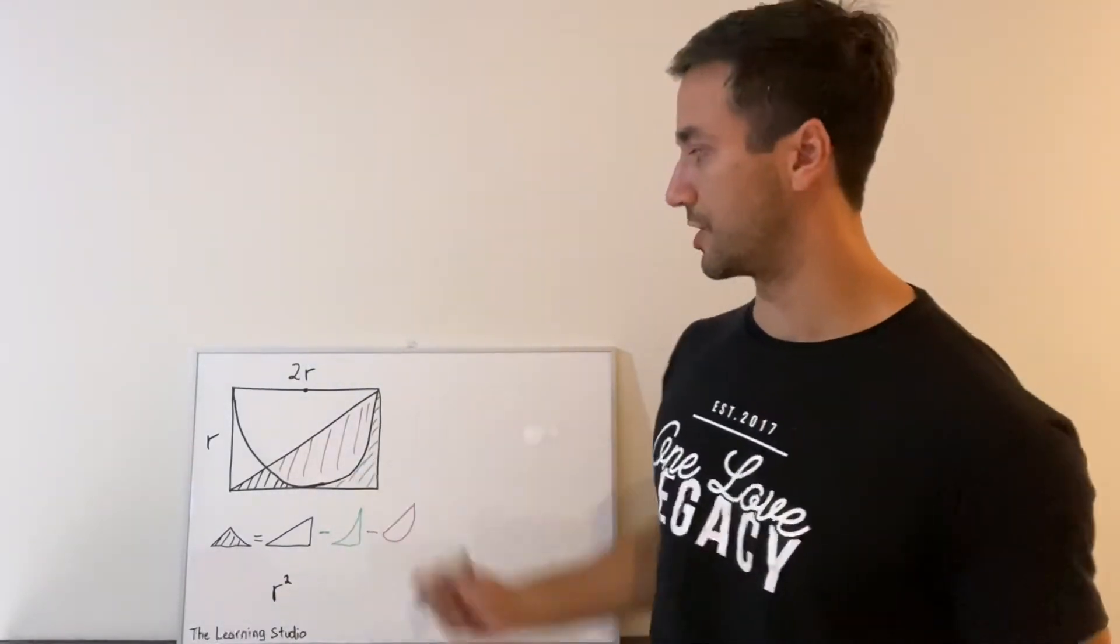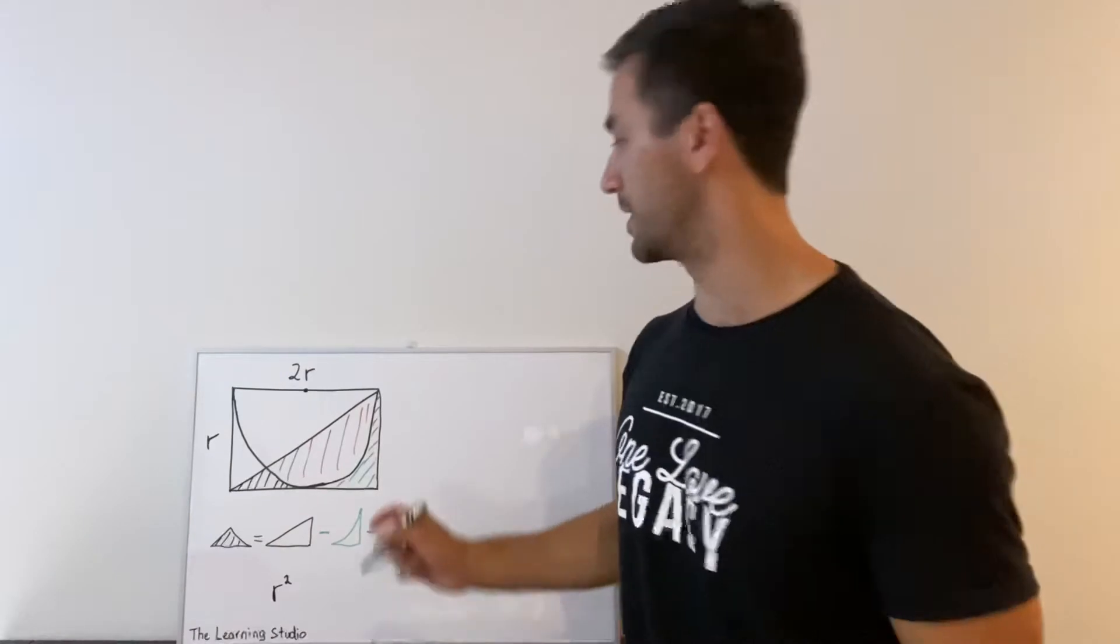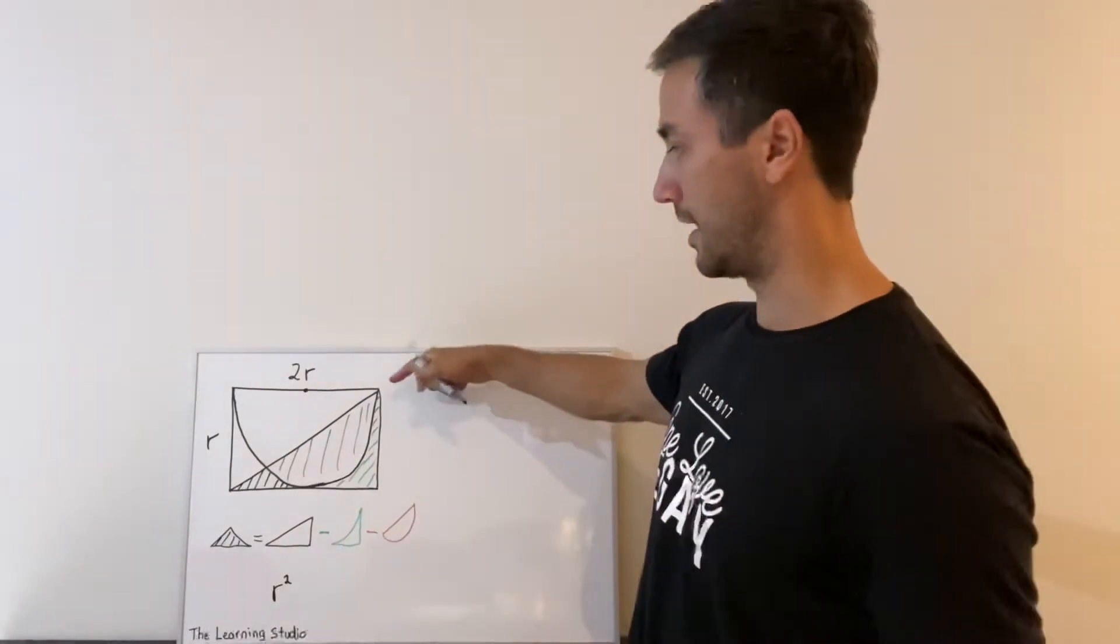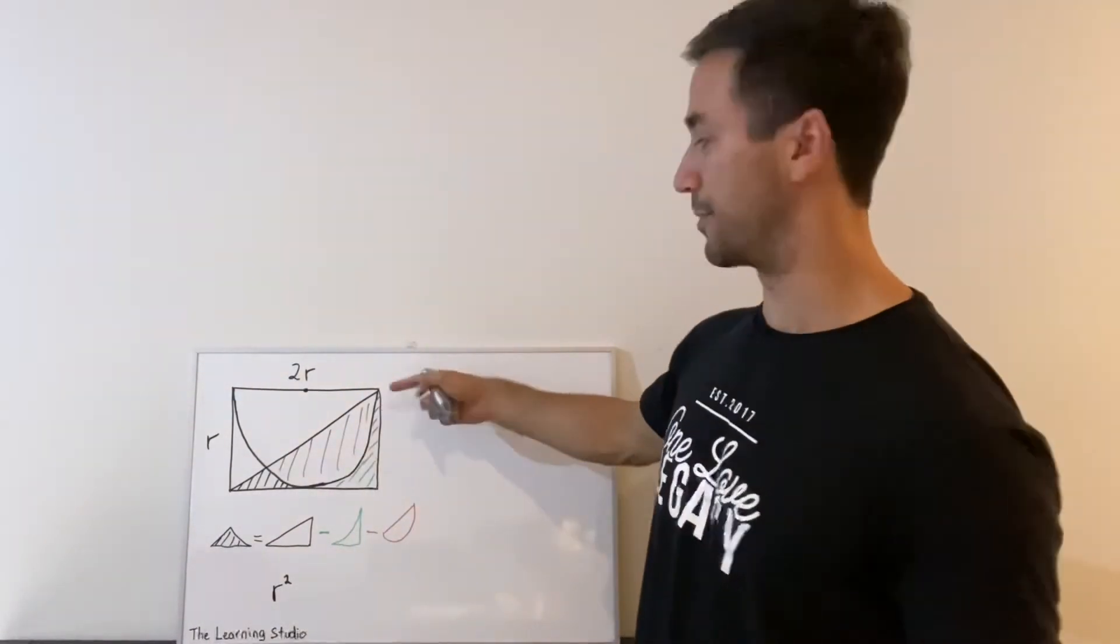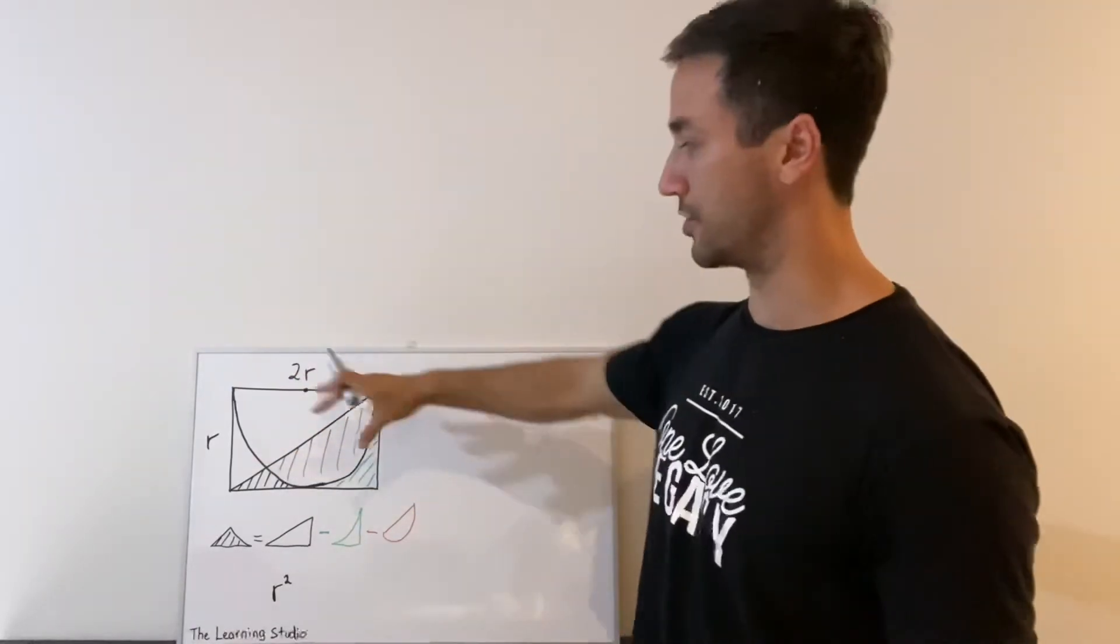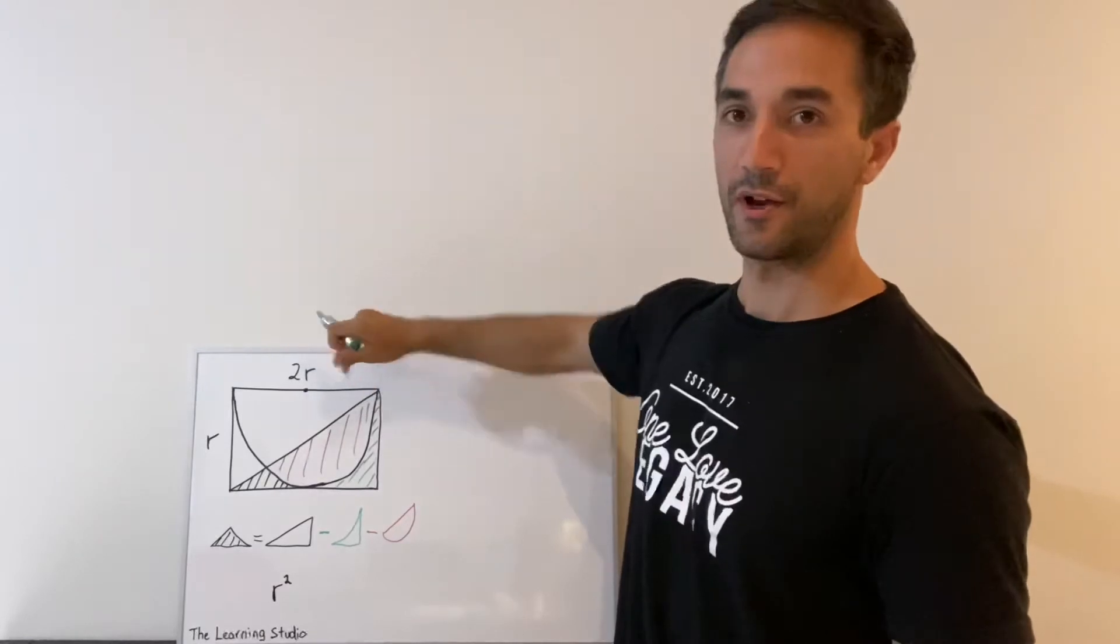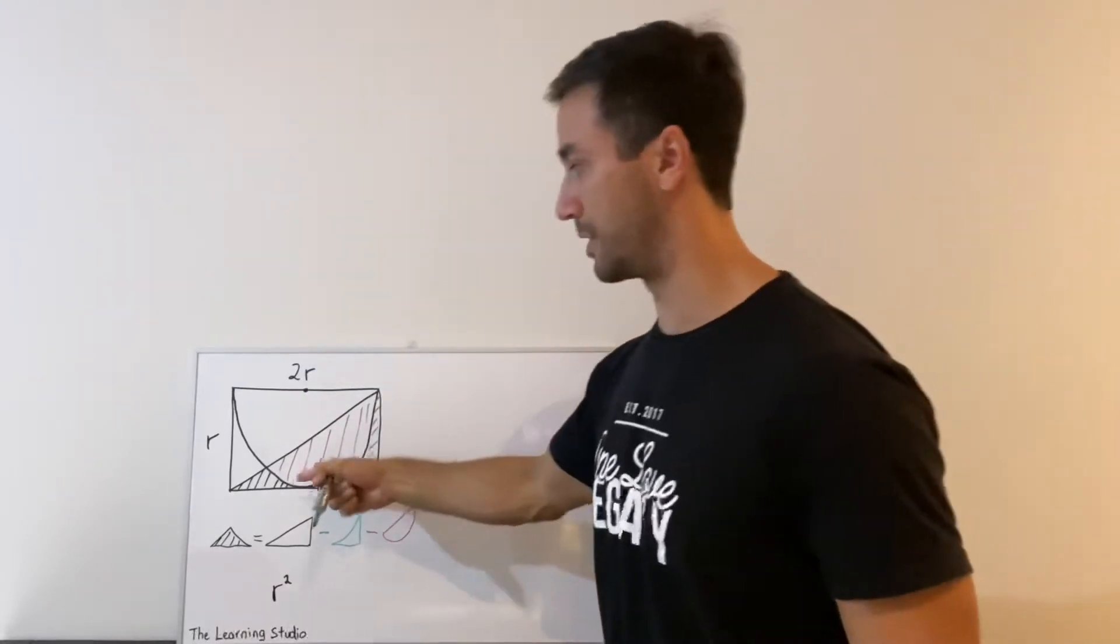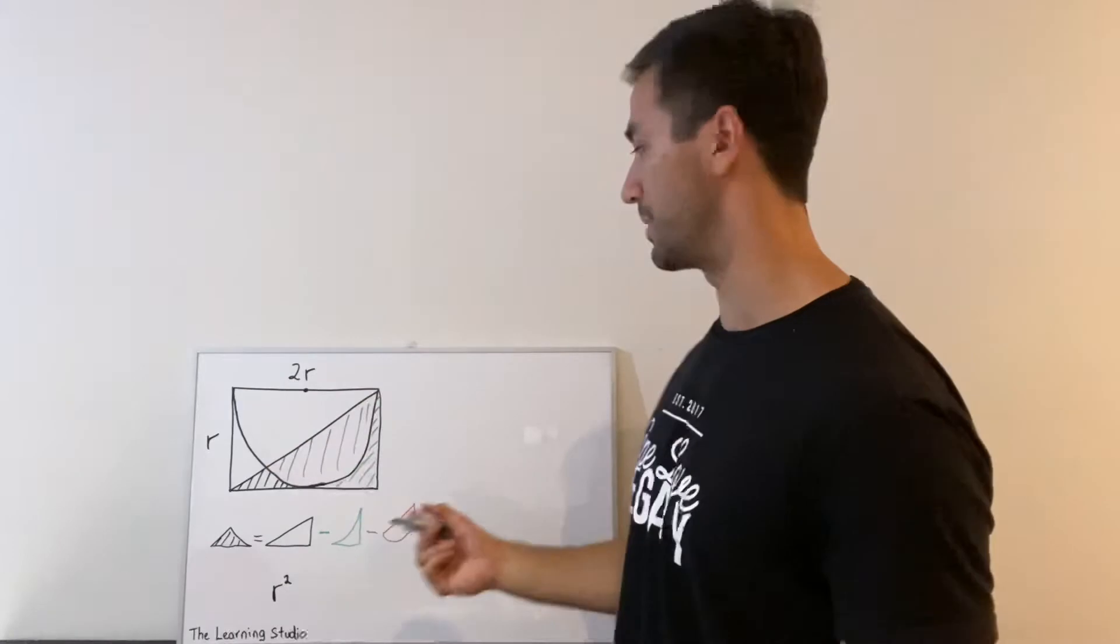The area of this green section is a little bit more involved, but it's still not too tricky. To get this green section, probably the easiest way to do it is to take the area of that entire rectangle and just remove that semicircle. And that will give us the green section plus another copy of that green section, so we can just divide it by two.